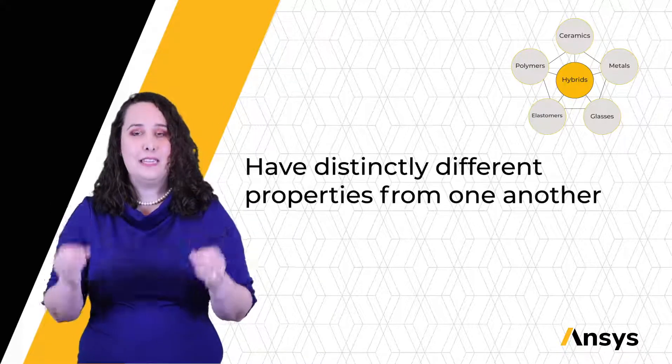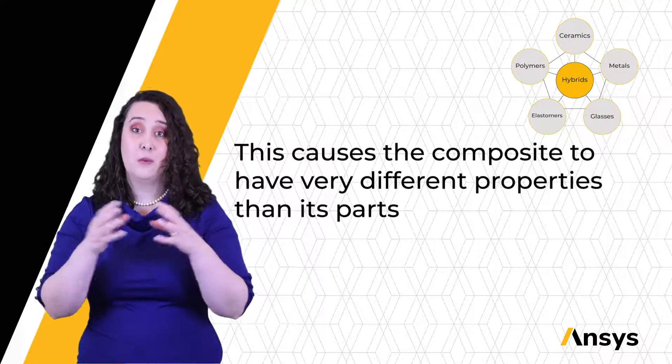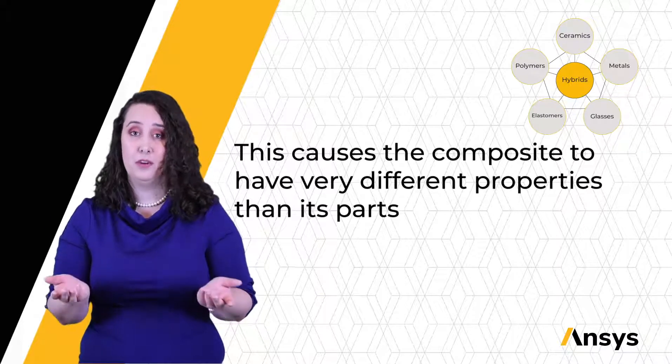However, a material is only considered a composite if its constituents, or the materials it's made out of, have distinctly different properties from one another. This causes the composite to have very different properties than its parts.